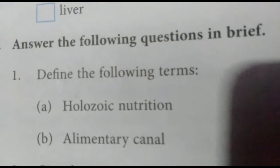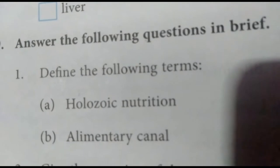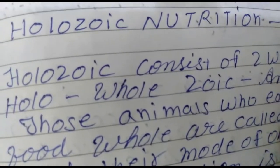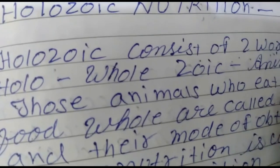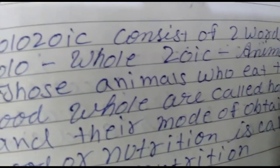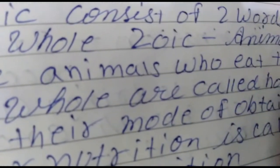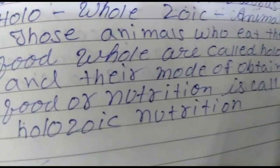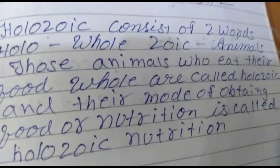Let us discuss the first question: define holozoic nutrition. Holozoic consists of two words - 'holo' means whole, 'zoic' means animals. Those animals who eat their food whole are called holozoic, and their mode of obtaining food or nutrition is called holozoic nutrition.